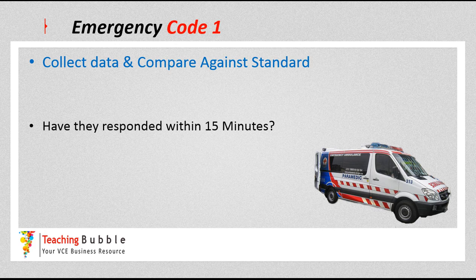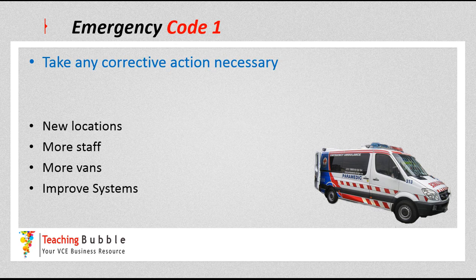The data is collected and compared against the standard — it's either they make the 15 minutes or they don't. They may also record why they didn't make it on time, whether there was a traffic accident or something similar. If they're consistently not hitting the 15-minute target, they may take corrective action: implementing new station locations, employing more staff, putting more vans on the road, or improving their communication systems.